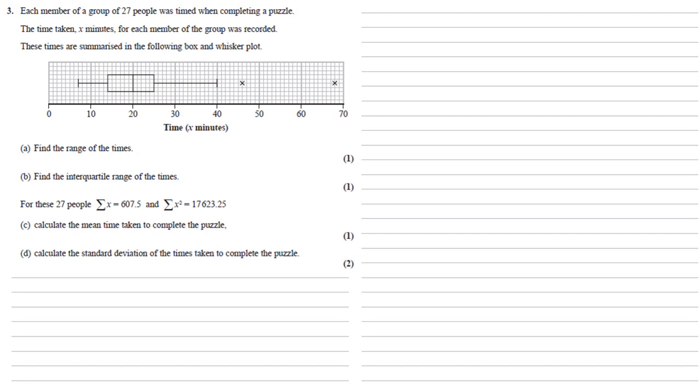Each member of a group of 27 people was timed when completing a puzzle. The time taken for each member of the group was recorded. These times are summarized in the following box and whisker plot.